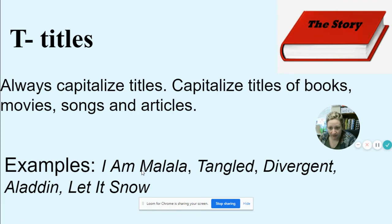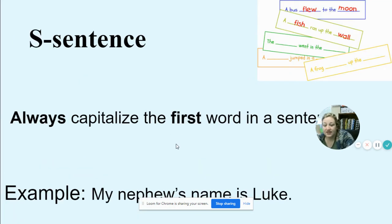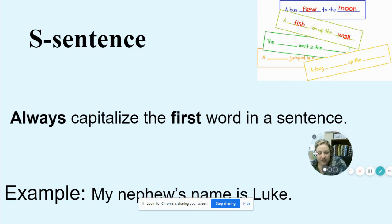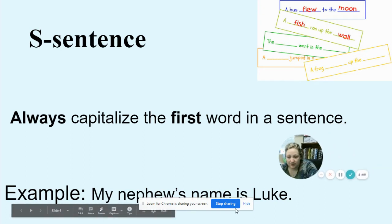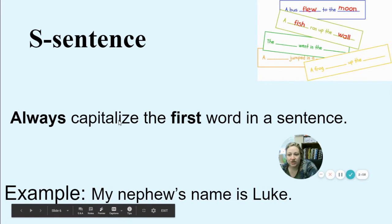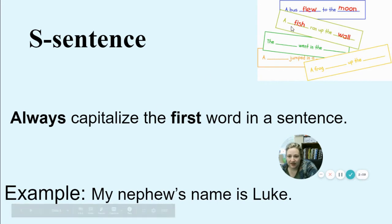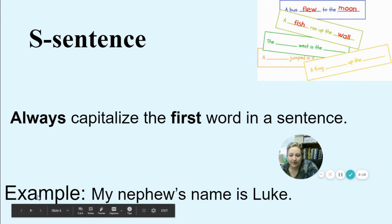S is for Sentences. The first word in your sentence should always be capitalized. Examples: A fish ran off the wall. A bus flew to the moon. Make sure the first letter of the first word is always capitalized. My example is: My nephew's name is Luke.